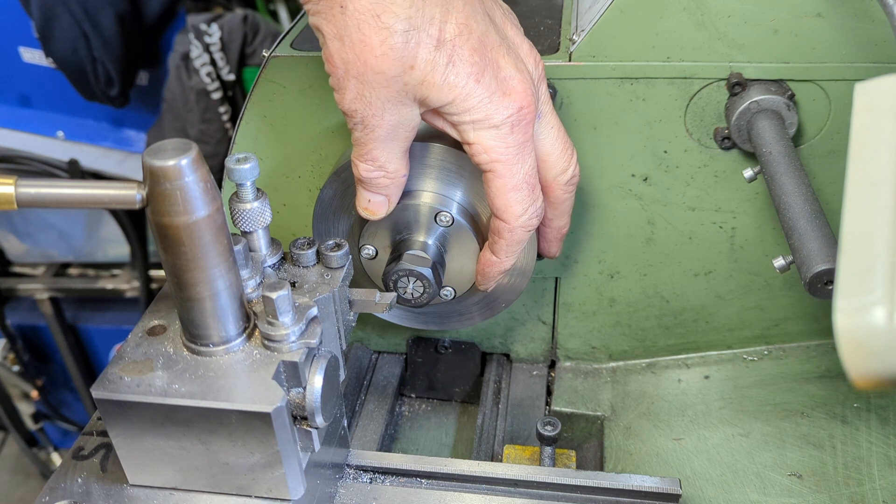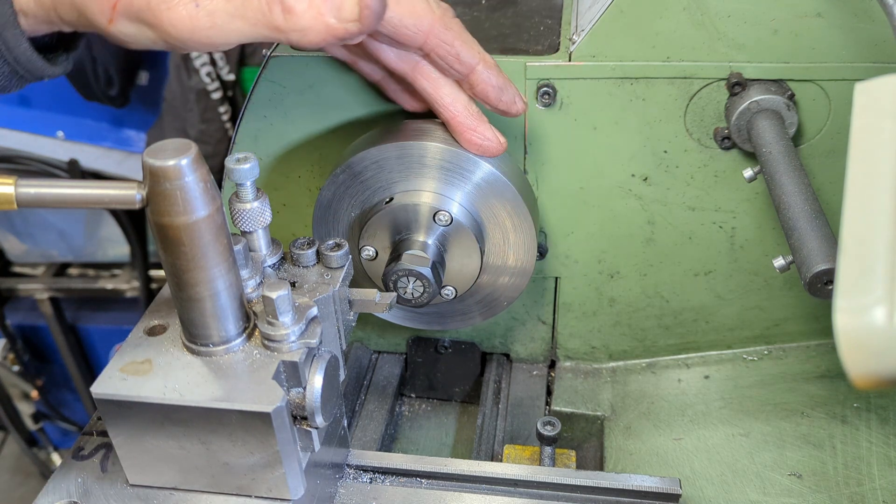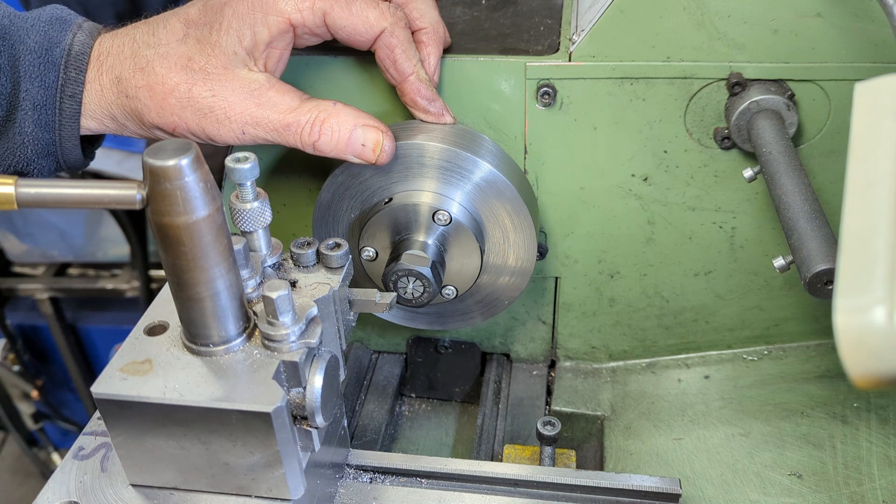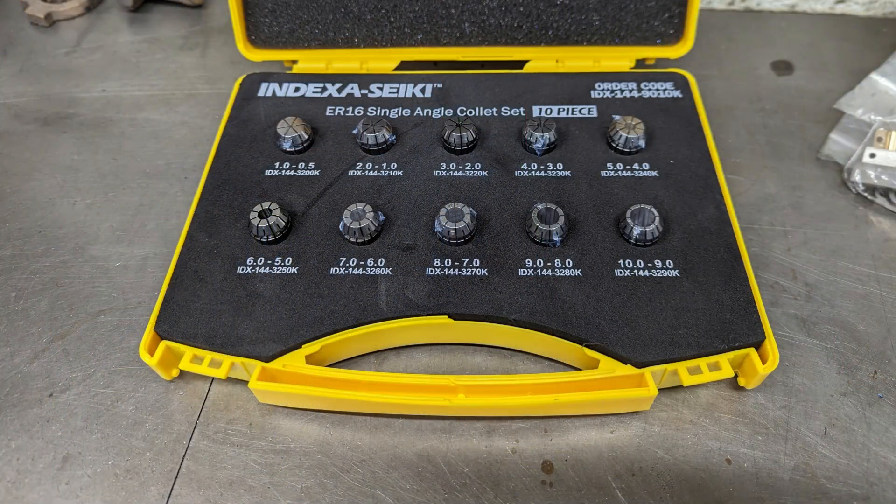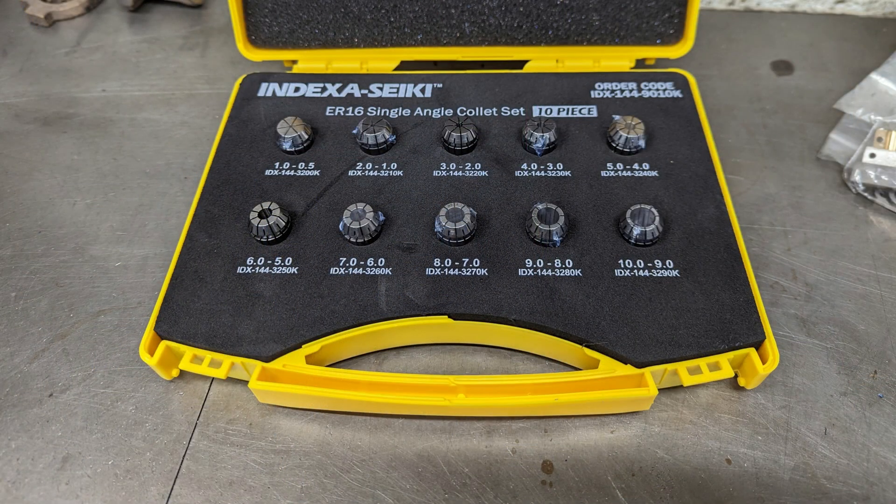To address that, I bought an ER16 collet chuck, turned a back plate, and also bought a set of ER16 collets. So I'm now good to go right down to 1.5mm diameter.